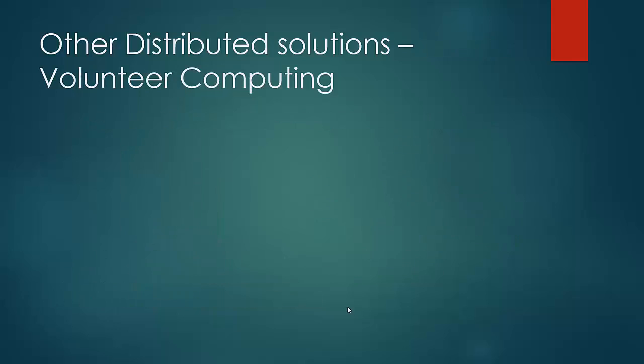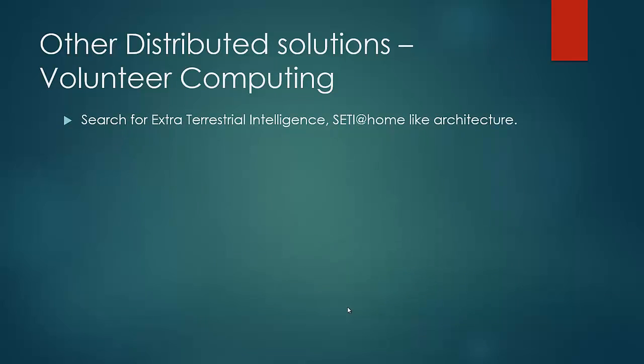Another distributed computing model is volunteer computing. SETI, which stands for Search for Extraterrestrial Intelligence, is a project which aims to analyze the radio waves received from the universe. They try to find a pattern — any trace of intelligent communication in the radio waves — to infer if there is any extraterrestrial intelligence trying to communicate with us. This project asks people to download their application, which would pop up as a screensaver on our computer. When we are not doing anything, this program uses the idle CPU cycles to analyze a work unit for patterns, applying various advanced algorithms like Fourier transforms.